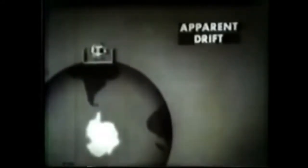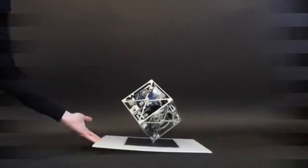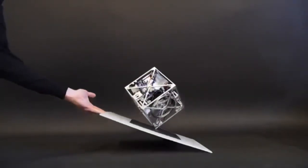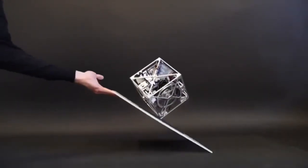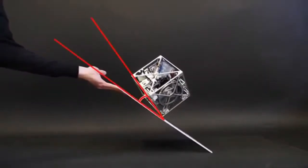Consider this condition known as apparent drift. The gyro maintains its attitude while the earth turns under it. Every six hours the gyro drifts through 90 degrees in relation to the earth's surface. So if you spin up a gyro, then what this video is saying is that six hours later you will perceive the gyro to have rotated 90 degrees.